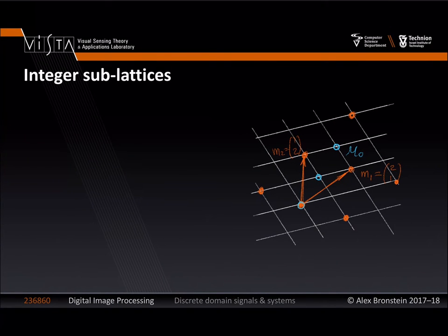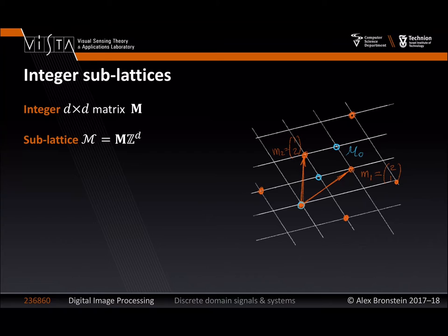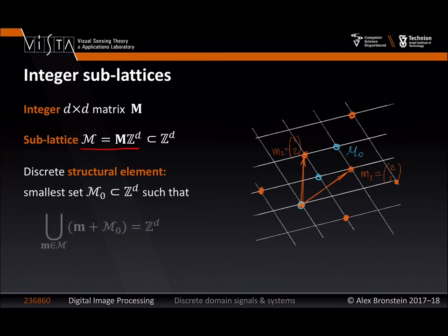What I would like to do instead is skip all the analog processing and do the transformation entirely in the digital domain — doing resampling entirely in the digital domain. As a mathematical tool, I'm going to define a sub-lattice of the integer lattice, since we now start with a sampled signal that already lives on some lattice. I'll take an integer D-by-D matrix M with integer entries and define a lattice M·Z^d. This is a sub-lattice of Z^d because any vector in M·Z^d is also a vector in the integer lattice, since I'm only scaling coordinates by integers.